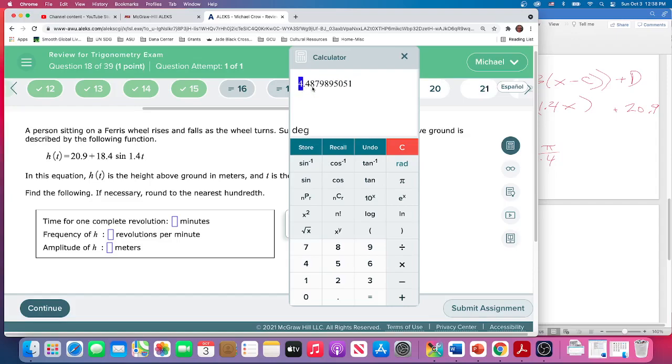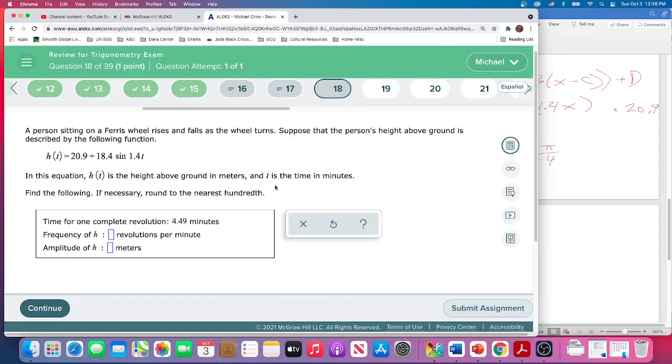So that eight goes up to a seven. So 4.49. Rounding it up. And time is in T, is time in minutes. So it takes 4.49 minutes for one revolution.